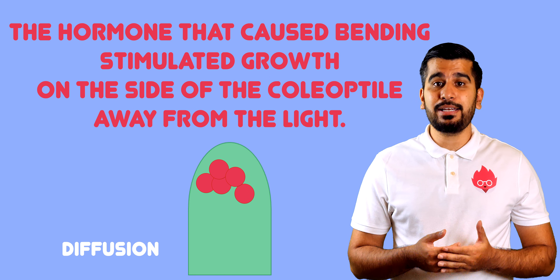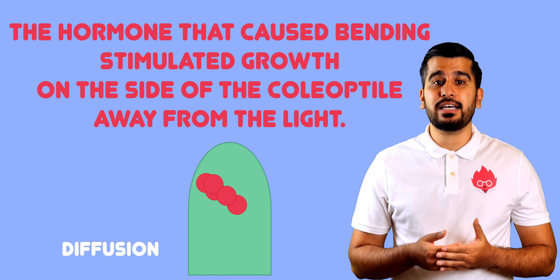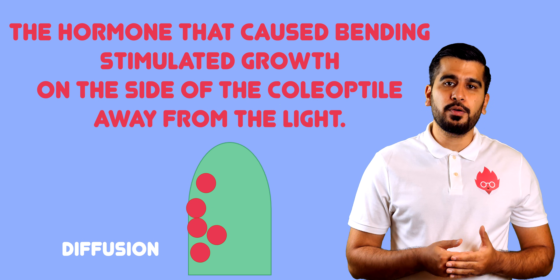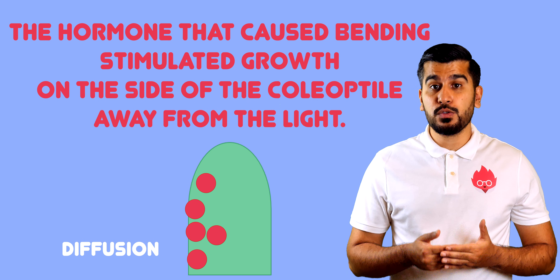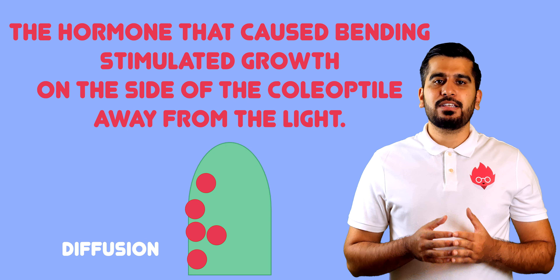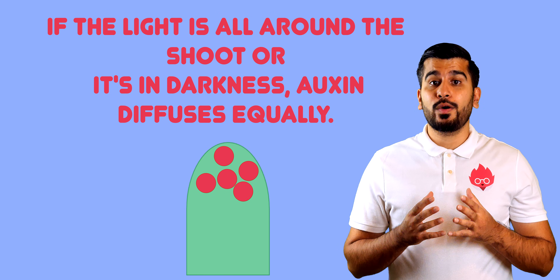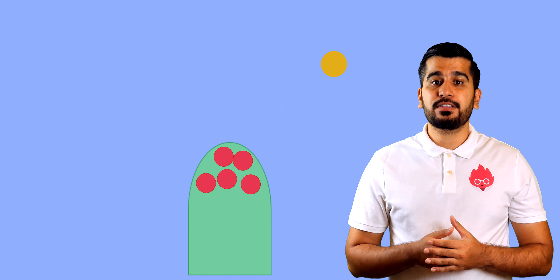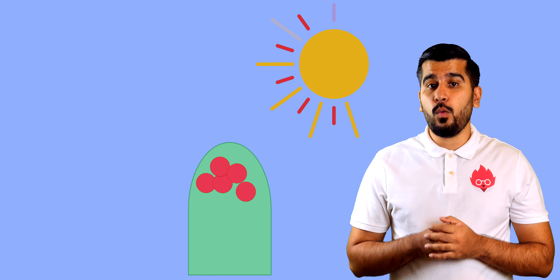The second and third experiments showed the following: the hormone that causes bending stimulated growth on the side of the coleoptile away from the light. The chemical hormone, which we now know as auxin, diffuses from the tip down the shoot. If the light is all around the shoot or it is in darkness, the auxin diffuses equally. If the light is coming from one direction, then the hormone moves to the side away from the light.